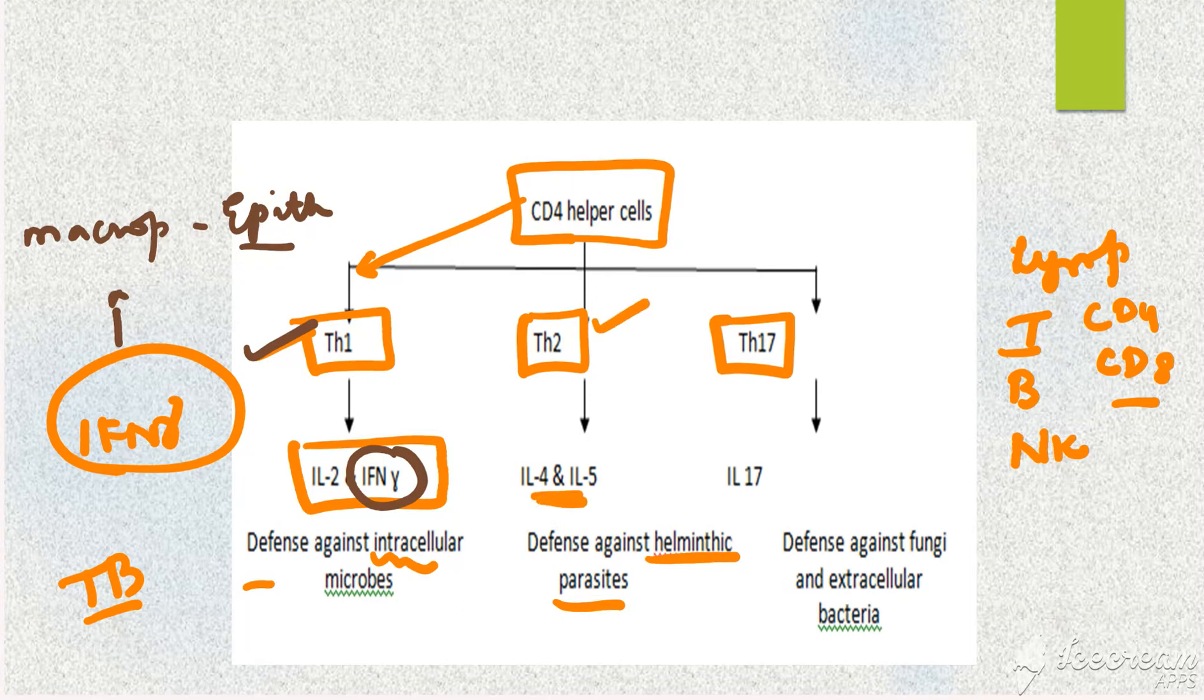T helper 2 cells produce interleukin 4 and 5. What does interleukin 5 do? It recruits your eosinophils. Likewise, when you have any fungus or extracellular bacteria, your T helper 17 cells get activated.